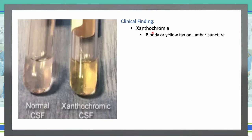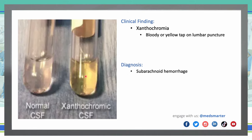Bloody or yellow tap on lumbar puncture — xanthochromia. Xanthochromia gives a yellow color: yellow color in the supernatant of centrifuged cerebrospinal fluid within an hour or less after collection is usually the result of previous bleeding. This is going to be subarachnoid hemorrhage. It may be caused by increased CSF proteins, melanin from meningeal melanocytes, or carotenoids. Xanthochromia is the presence of bilirubin in the CSF and is a positive marker for acute subarachnoid hemorrhage, distinguishing it from a traumatic tap.